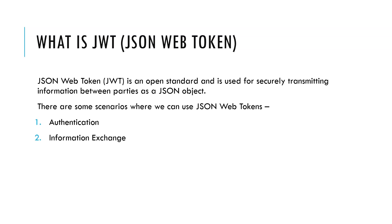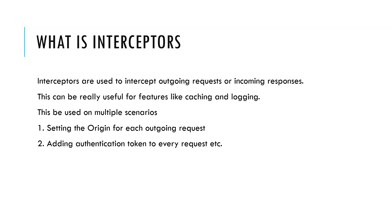What is JWT? JSON Web Token can be used in scenarios like authentication or information exchanges. What are interceptors? Interceptors are used to intercept outgoing requests or incoming responses, which can be very useful for features like caching and logging.